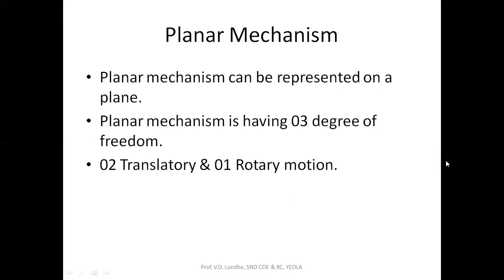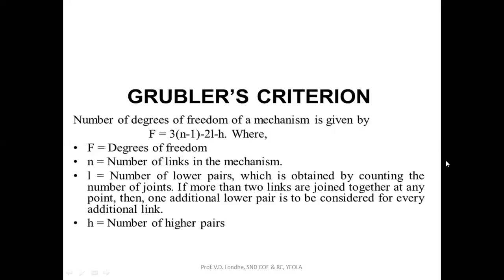For a planar mechanism, there are three degrees of freedom — two translatory and one rotary. For finding the degree of freedom of a planar mechanism, the scientist Grubler defined a criteria known as Grubler's criteria. The formula is: degree of freedom F = 3(n − 1) − 2l − h, where n is the number of links, l is the number of lower pairs (joints with surface or area contact).